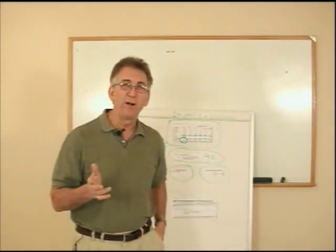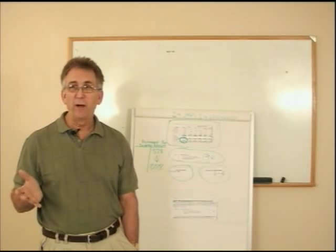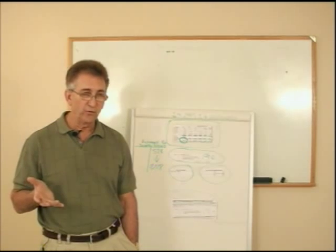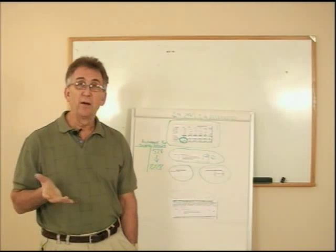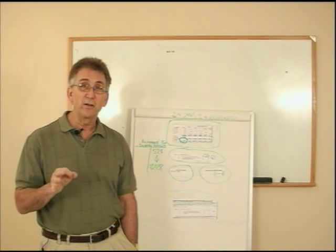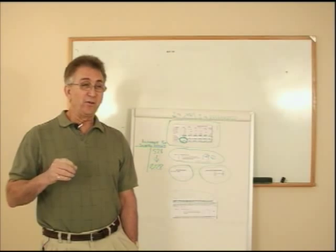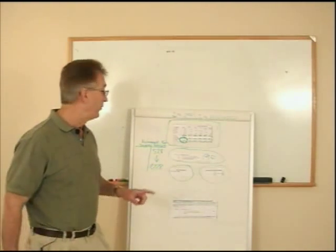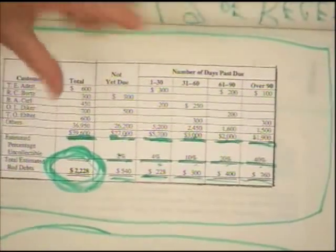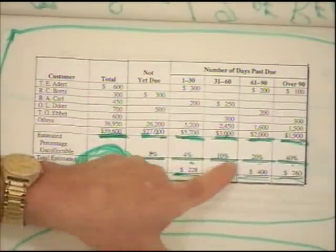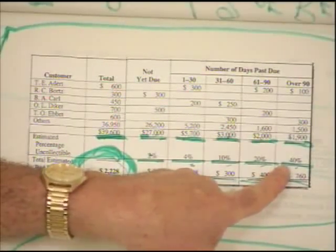Sorry for that interruption. When we age our receivables, we know that the longer somebody owes us money, the less chance we have of collecting it. So for the over-90-day category, the uncollectible percentage is 40%.